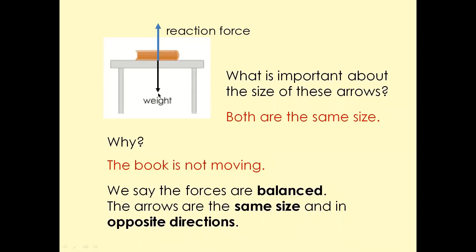If the length of the arrows is the same, that means the forces are equal. For example, if one is 10 Newtons, the other is 10 Newtons — forces are balanced. The arrows are also pointing in opposite directions. So when the arrows are the same length and pointing in opposite directions, the forces are balanced and the object is not moving.